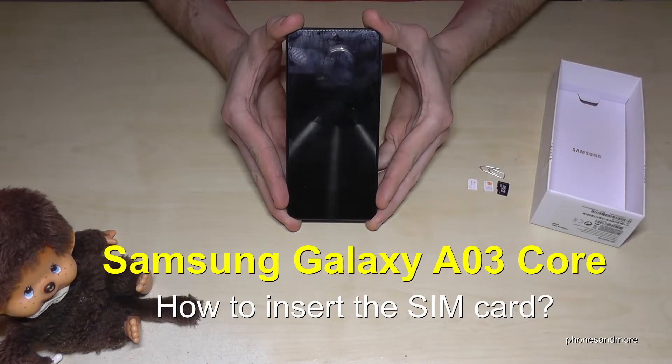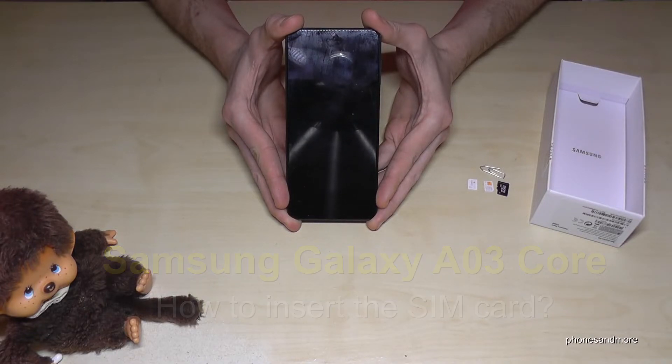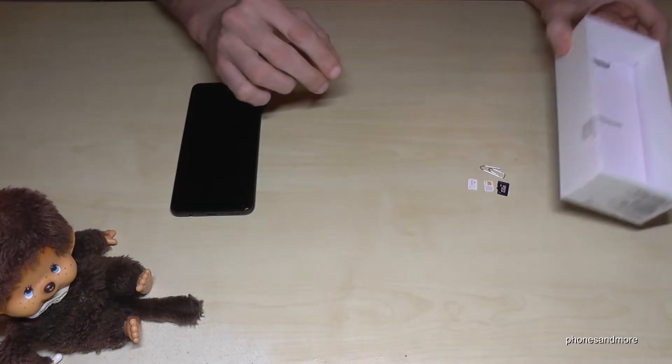Hello everybody, I want to show you with this video how you can insert a SIM card in the Samsung Galaxy A03 Core. For that we will need the phone and the SIM ejection tool, which is part of the box cover, so you can remove it.